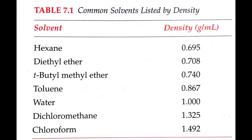Here's a table showing some common densities of organic solvents. Dichloromethane, for example, has a density of 1.325 grams per milliliter, and hexanes have a density of 0.695 grams per milliliter. This means that during an extraction, if we used these two solvents, we would expect to see dichloromethane as the bottom layer. Feel free to pause the video if you want to take a look at this table more carefully.